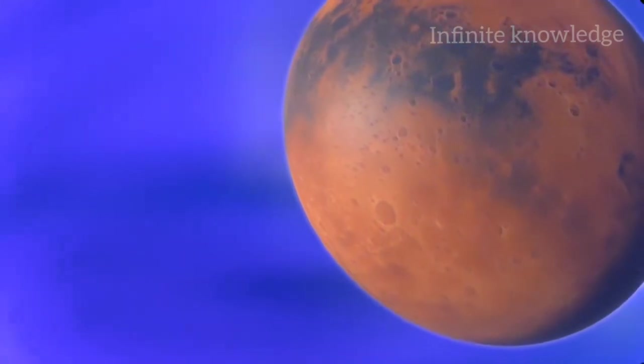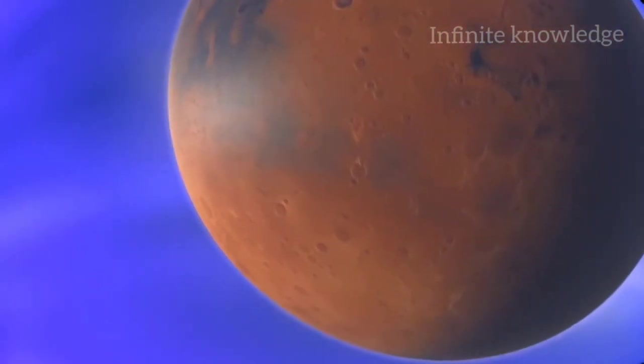Although its rotation is fast enough, Mars lacks a liquid iron core to create a global magnetic field. Without a magnetic shield, the solar wind reaches the planet's thin atmosphere and has robbed Mars of most of its hydrogen and oxygen.